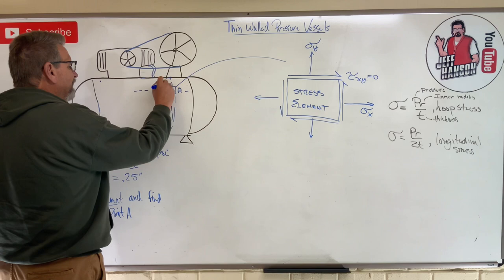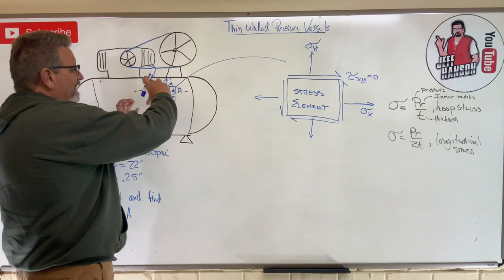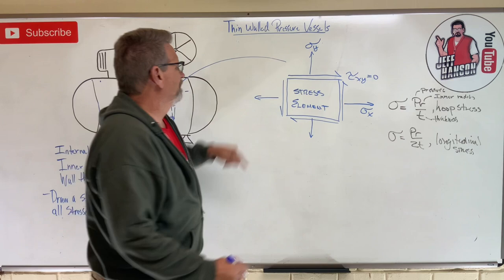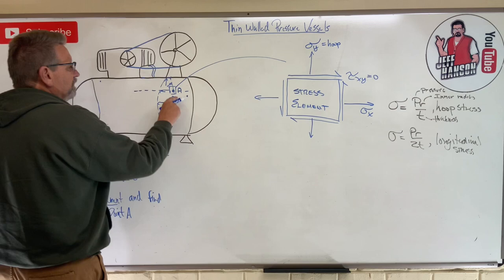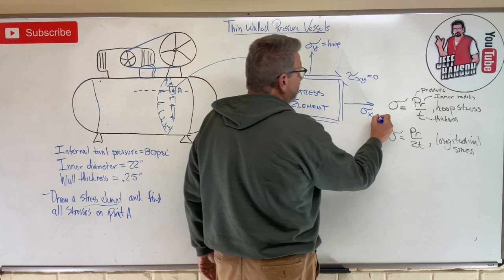It's trying to make the whole diameter, the circumference bigger. So the hoop is here, this guy's hoop. And then in the horizontal direction, why am I getting a stretch in this direction? Because the pressure is trying to push the ends off the tank. So this guy over here is going to be caused by longitudinal stress.